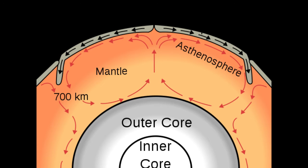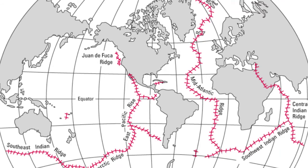A mid-ocean ridge is an underwater mountain system formed by plate tectonics. It consists of various mountains linked in chains, typically having a valley known as a rift running along its spine. This type of oceanic mountain ridge is characteristic of what is known as an oceanic spreading center, which is responsible for seafloor spreading.